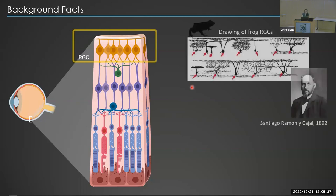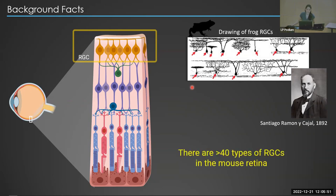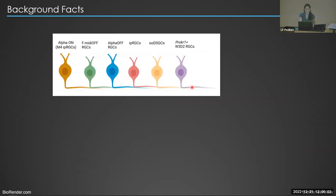Dating back to 1892, Santiago Ramón y Cajal, one of the most important neuroscientists of the last century, was already focused on the different retinal ganglion cell subtypes. And today, with the advent of high-throughput sequencing technologies, we know that there are more than 40 types of retinal ganglion cells in the mouse retina.